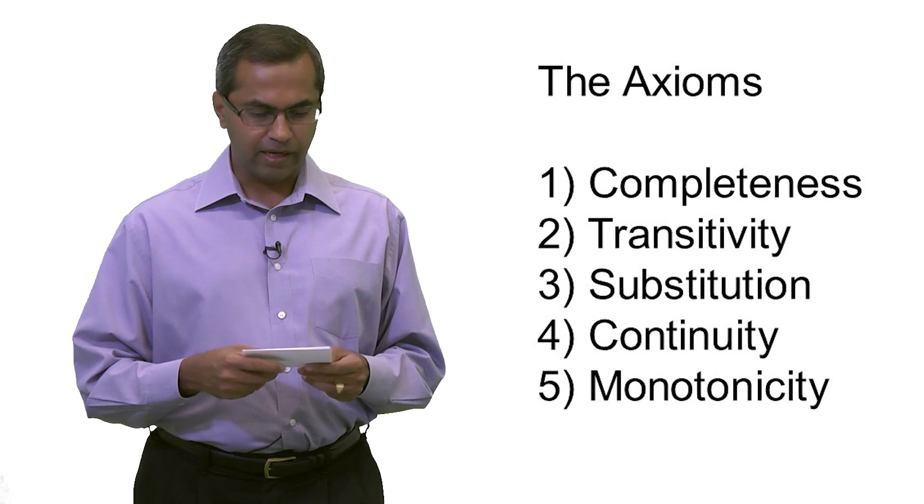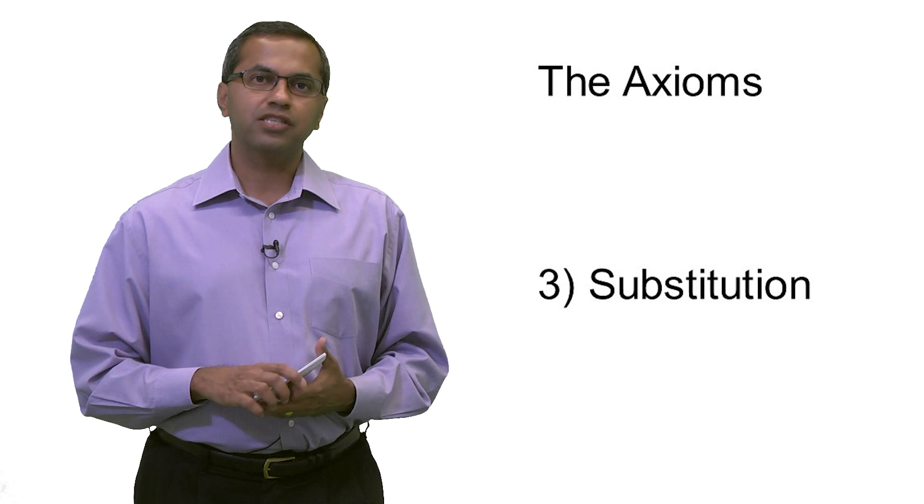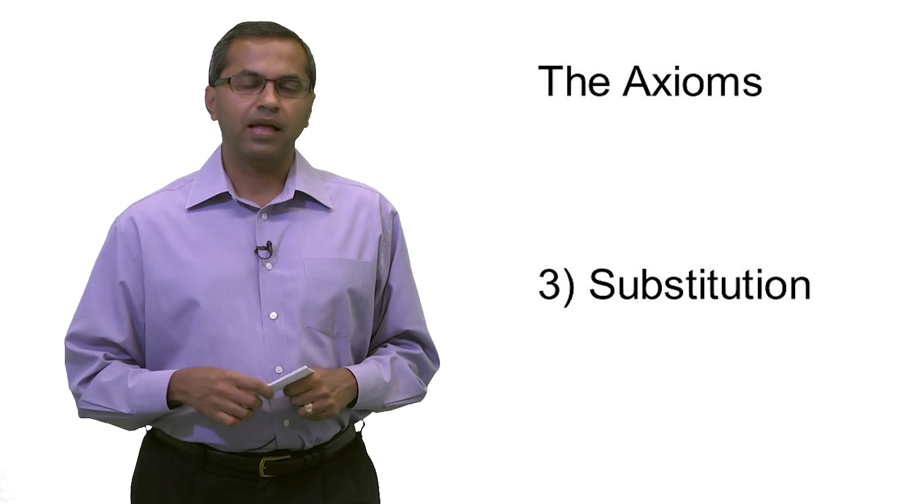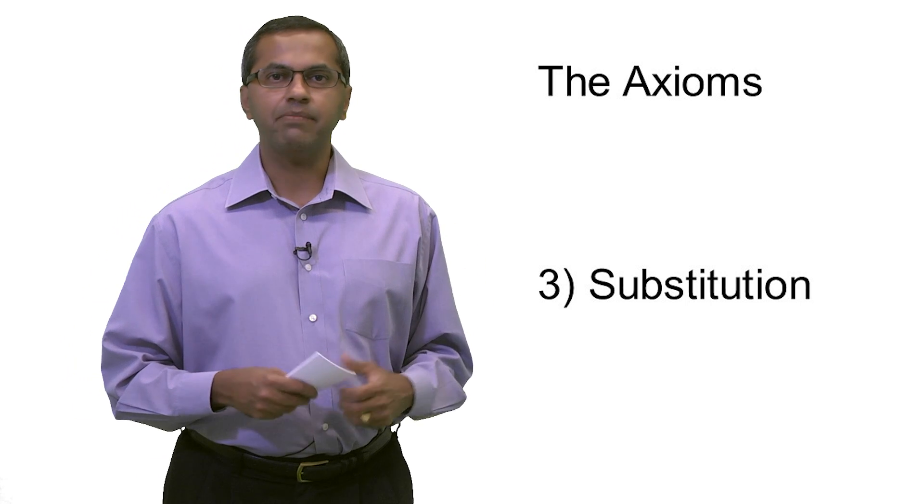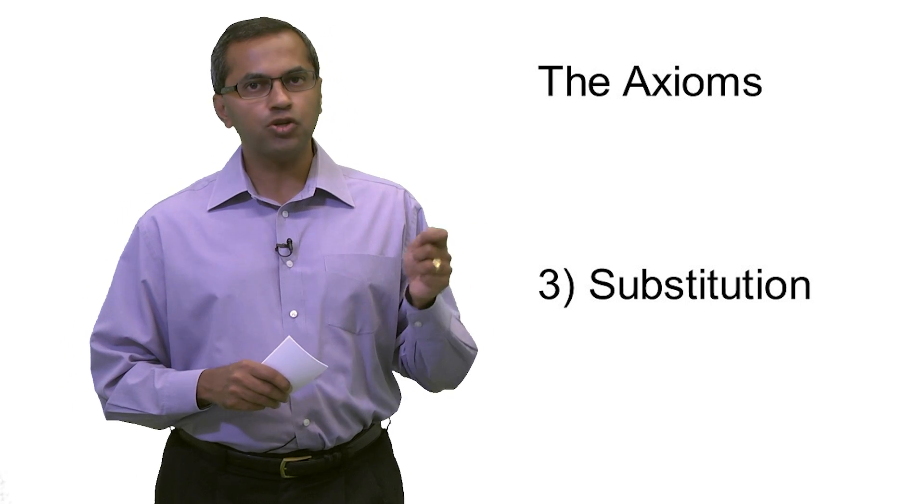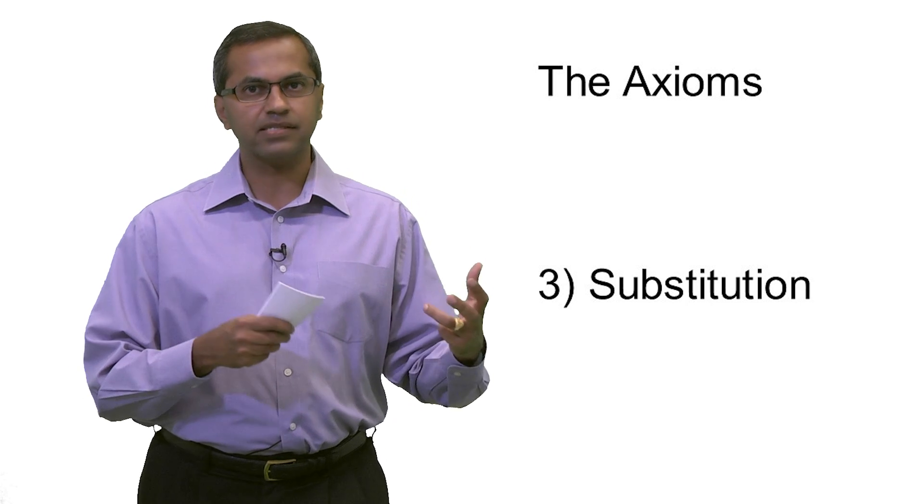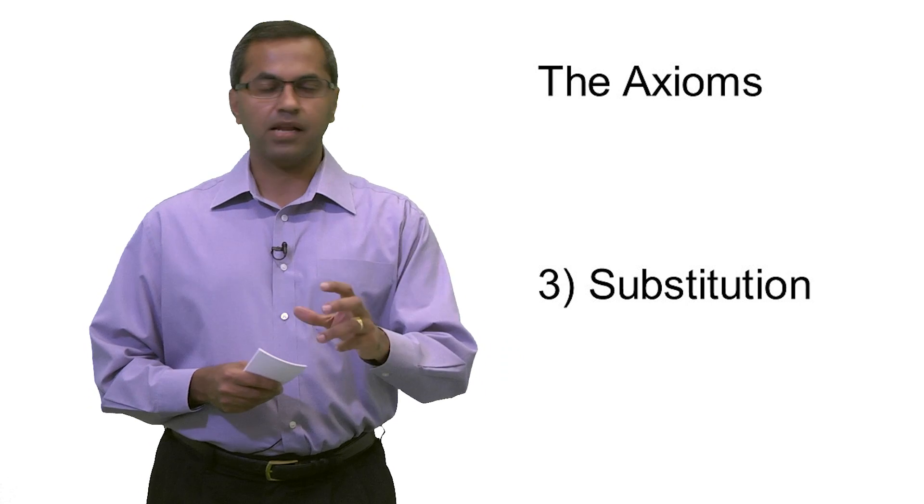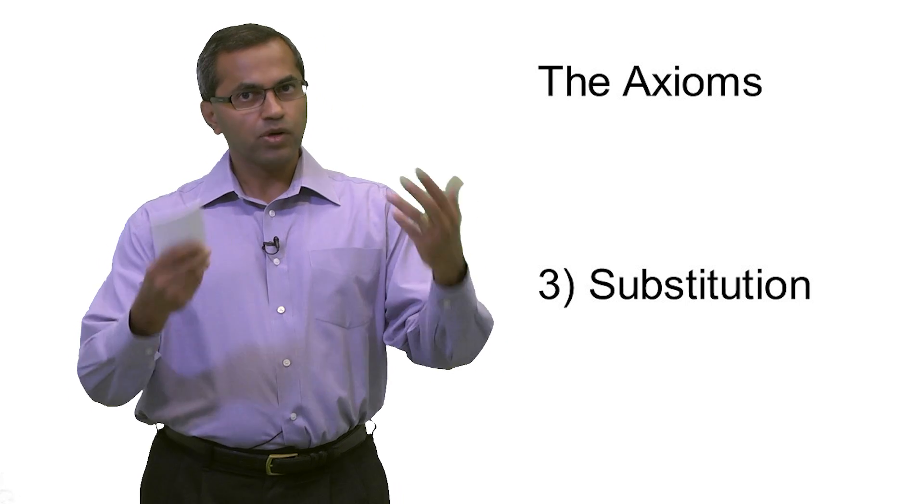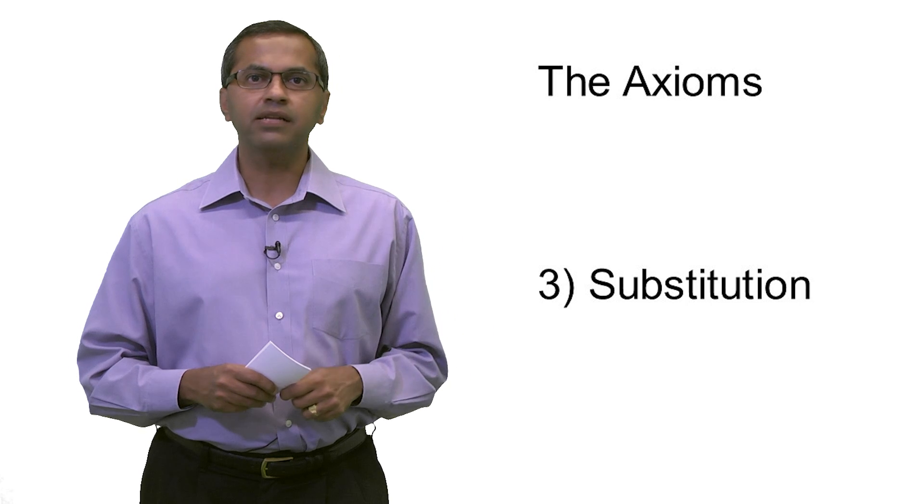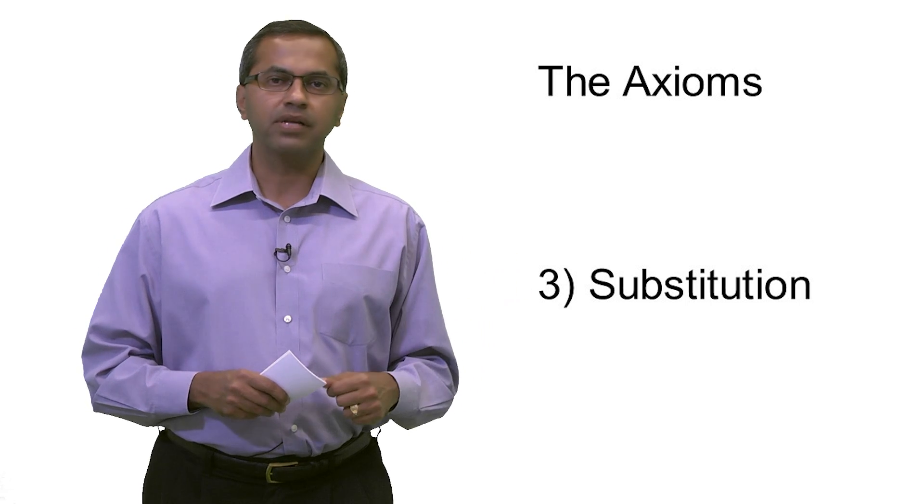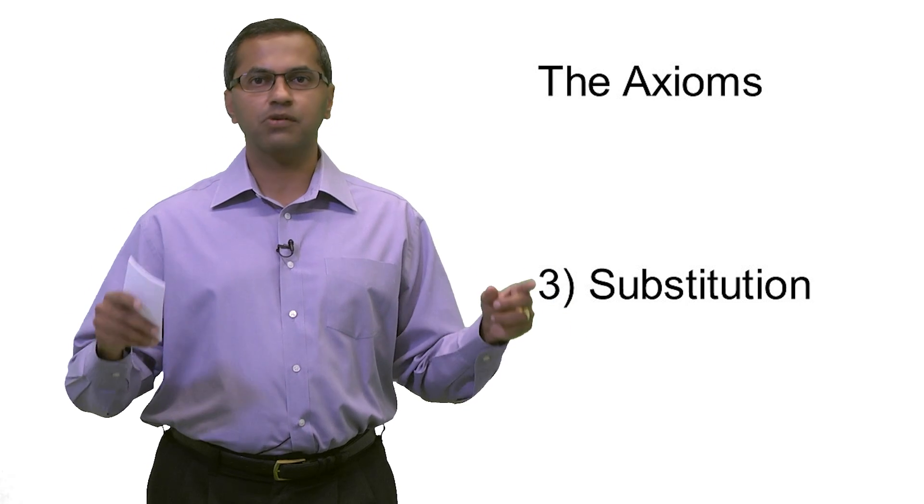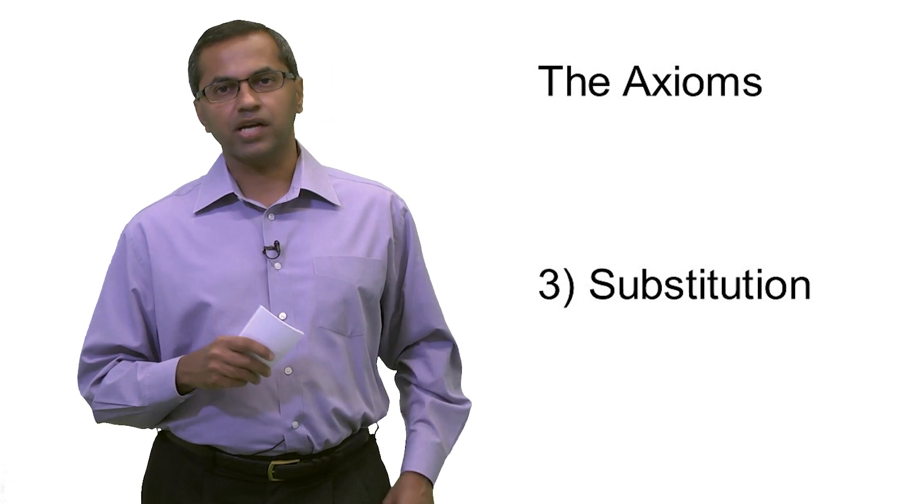Here's the third and more important axiom. And this axiom is called the axiom of substitution. And it says the following: if I have two options, X and Y, and I'm indifferent between X and Y, then I should be indifferent between two lotteries that have X and Y as their prize. So for example, if I love an apple as much as I love a banana, then you come to me and say, if you're going to toss a coin, in one case, if it's heads, you're going to get an apple. In the other case, if it's heads, you're going to get a banana. Then I should be indifferent between those two lotteries because I was indifferent between the two prizes to begin with.